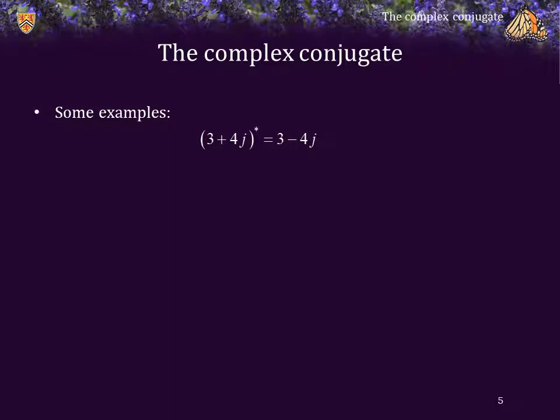Some examples: the complex conjugate of 3 plus 4j is 3 minus 4j. The complex conjugate of negative 2 plus j is equal to negative 2 minus j. And the complex conjugate of 5 minus 7j is 5 plus 7j.